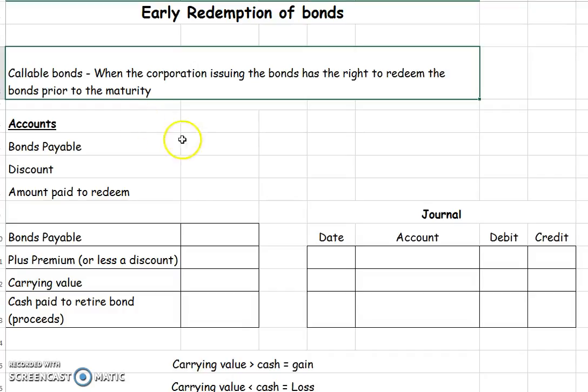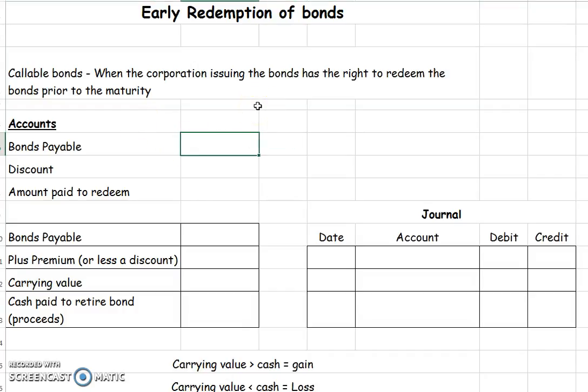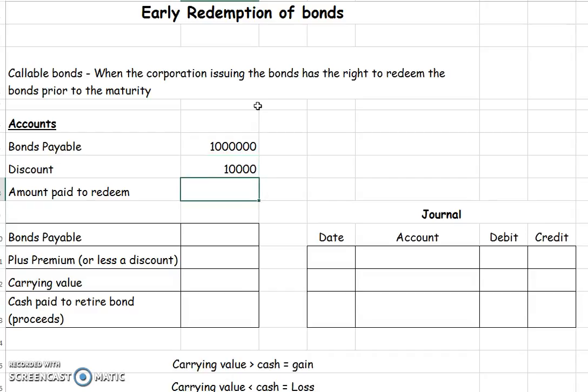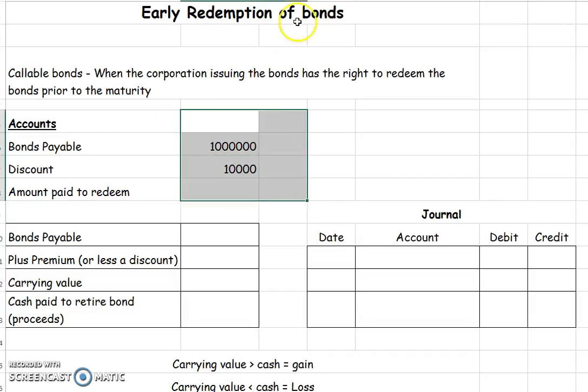So let's see how this works. You'd be given some numbers — you'd be given what your bonds payable is, that's how much you owe. You would also be given either a discount or a premium account if you had one. Let's say that we had a debit balance in our discount account.